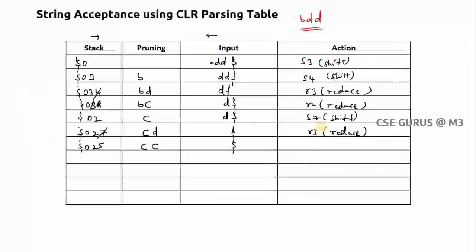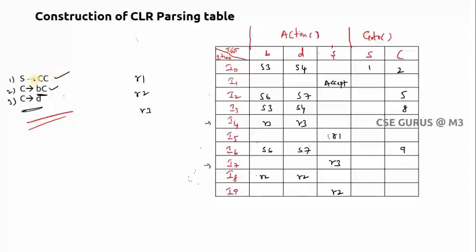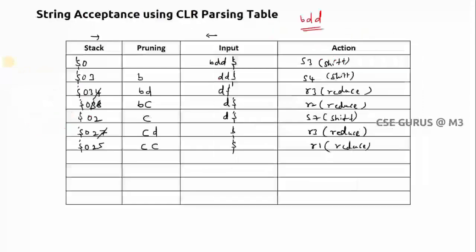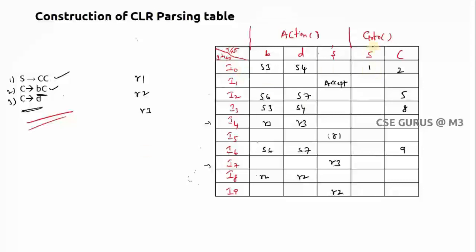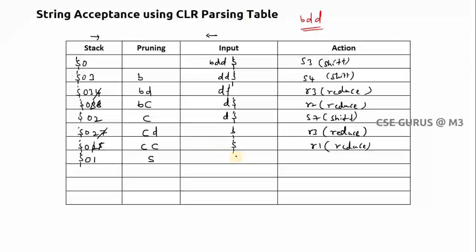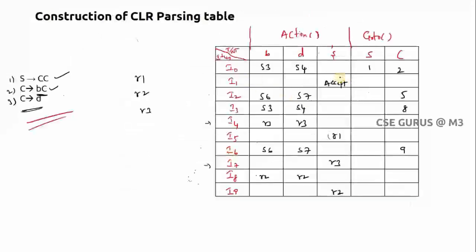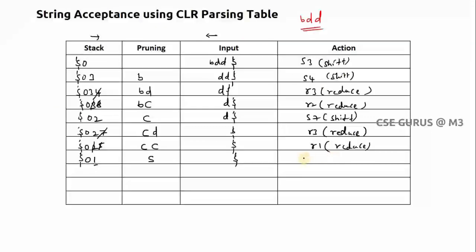Top state is I5 and input symbol is dollar. Check I5 to dollar: R1 — reduction. First production: S → CC. The handle is CC; reduce CC to S. Two symbols reduced — cross two numbers. Remaining state is I0; check I0 to S in goto: it is 1. Write 1. Stack becomes: dollar 0 1, and remaining input is dollar.